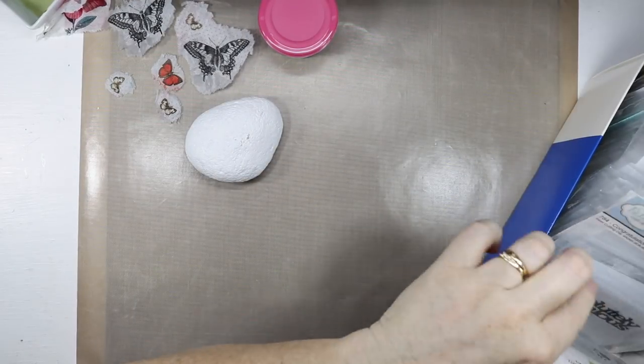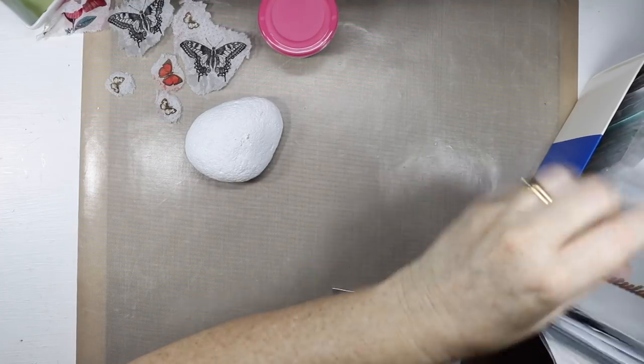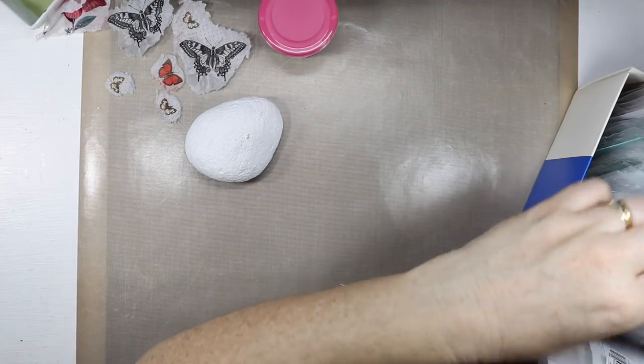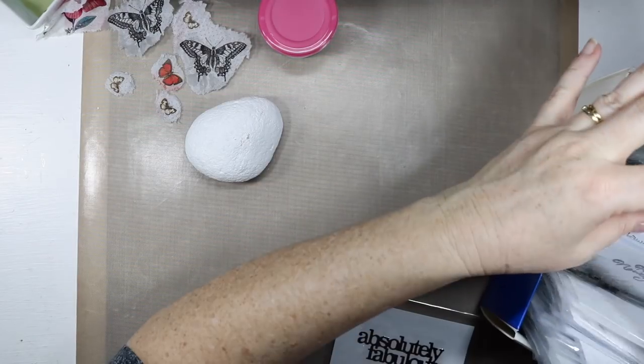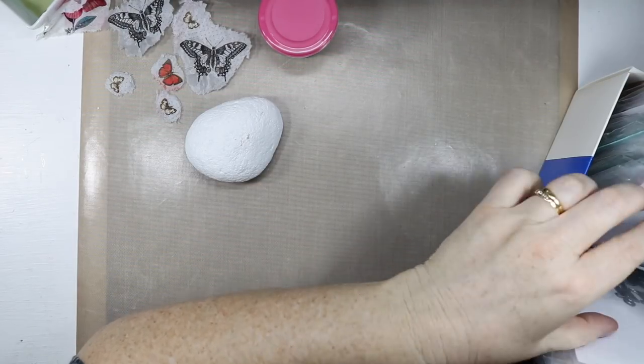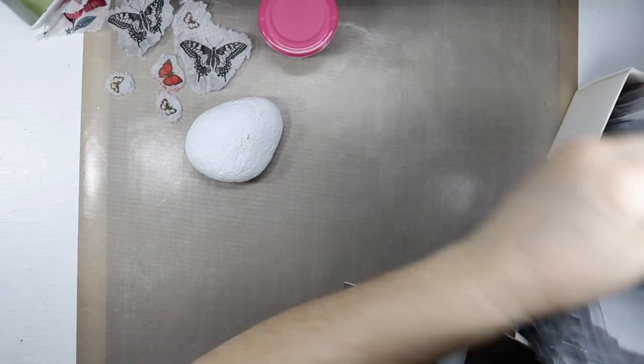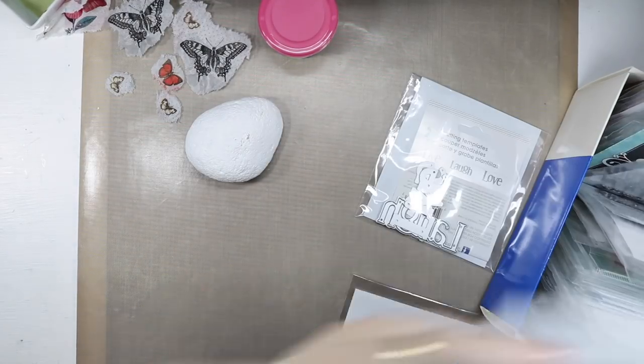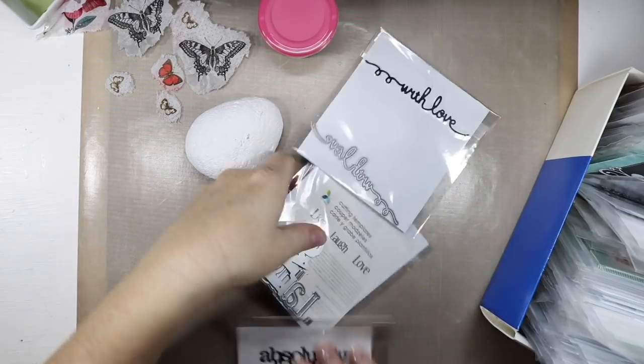So I've got my box of word dies here and I'm just going to go through it and just pick out some words that I think I'm going to use. So I want to get everything ready before I do the mod podge so I just want to do the mod podge just in one hit.